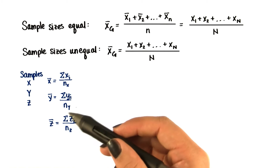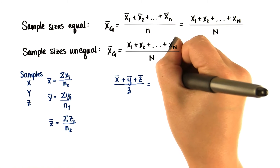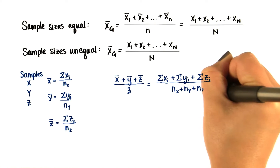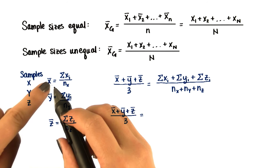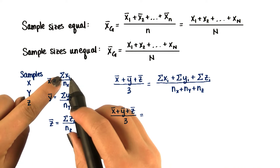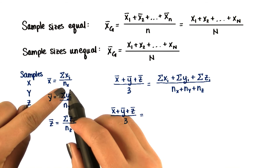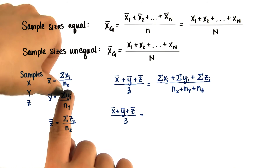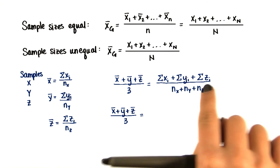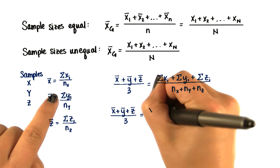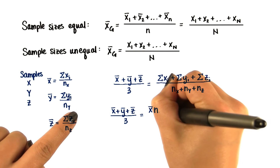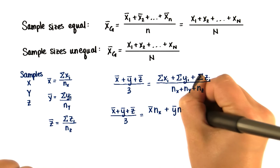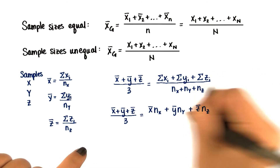We want to know if the mean of means equals the total mean — the sum of all the values in x, y, and z divided by the total number in each sample. We know that because the mean of x is the sum of the x values divided by the total number, the sum of x is just x-bar times the number. So we can replace that in each of these: the sum of the xi's equals the average times the number in x, the sum of the y values is the average of y times the number, et cetera.